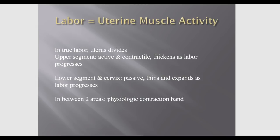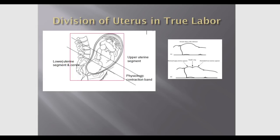In true labor, the uterus is divided by activity. The upper segment is active — it contracts and thickens as labor progresses. The lower segment is more passive — it thins and expands as the cervix opens. In between these two areas is a physiological contraction band. Normally this band is not visible unless there is a problem — in high risk situations it's called Bandl's ring, and it indicates developing complications.